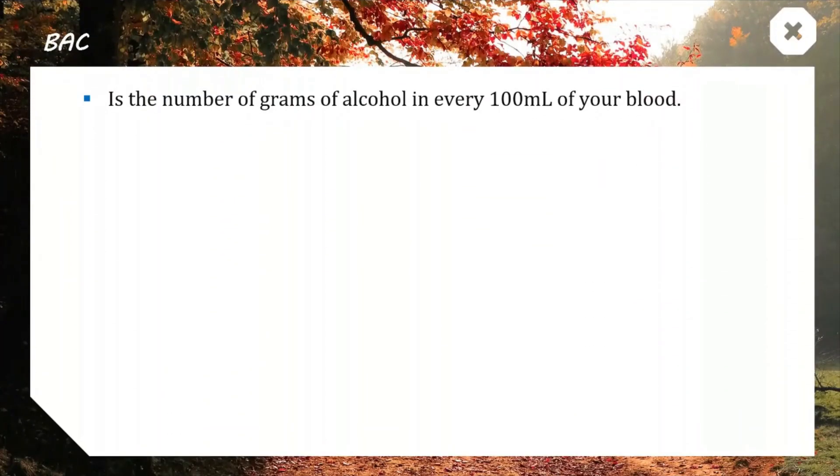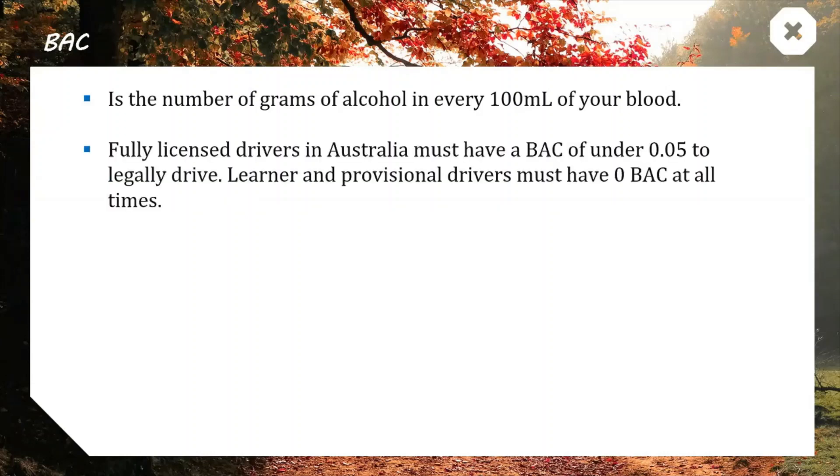So BAC, just a bit of trivia to kick off, is defined as the number of grams of alcohol per 100 mils of your blood. So if you have a BAC of 0.05, you have 0.05 grams of alcohol in every 100 mils of blood in your body. In Australia, fully licensed drivers need to be under 0.05 to legally drive, and if you're on your L plates or your P plates, you need to have 0 BAC, so no alcohol in your system at all times.